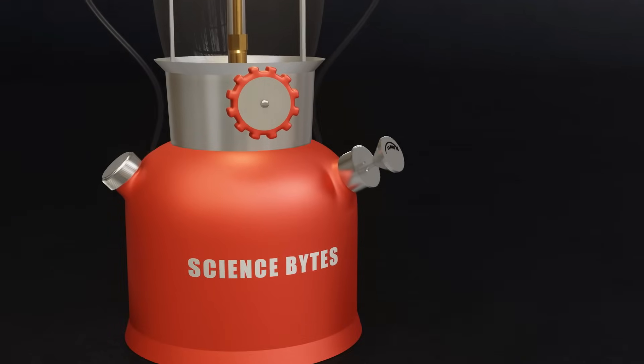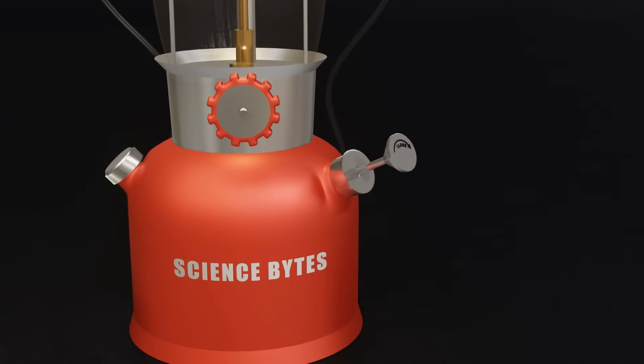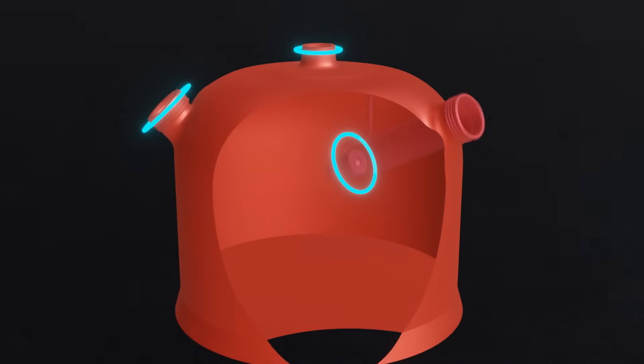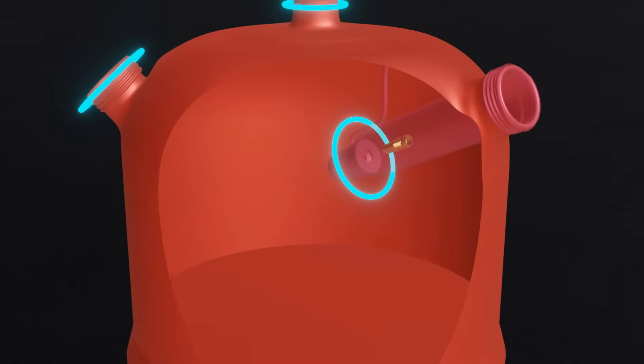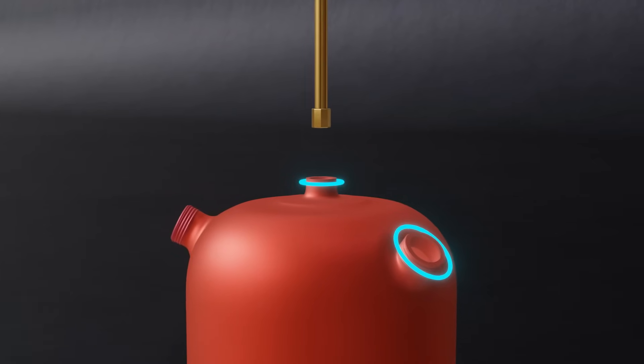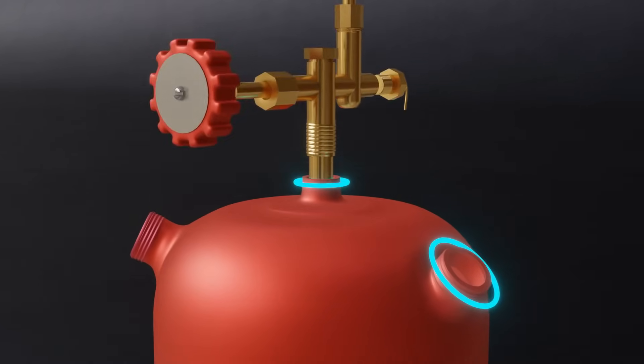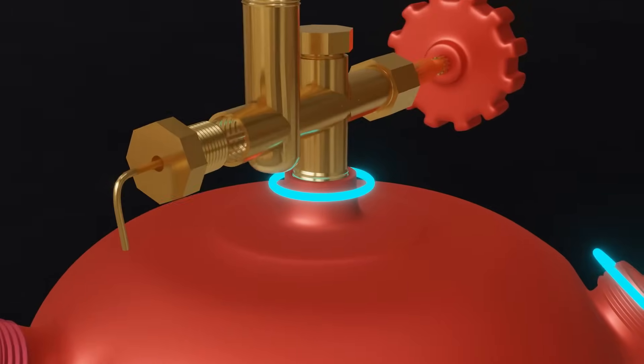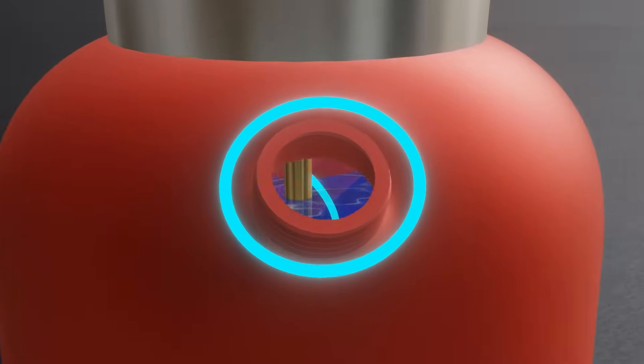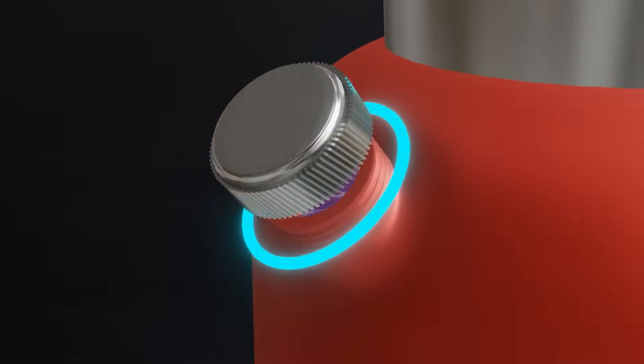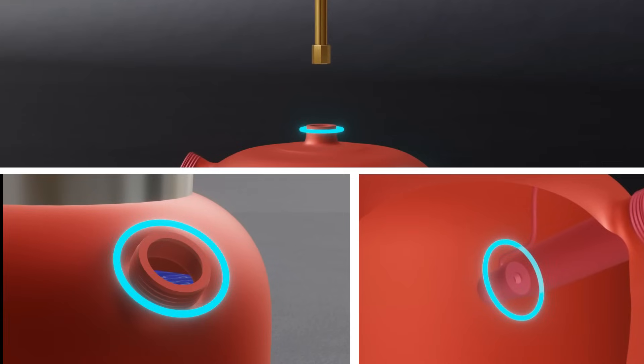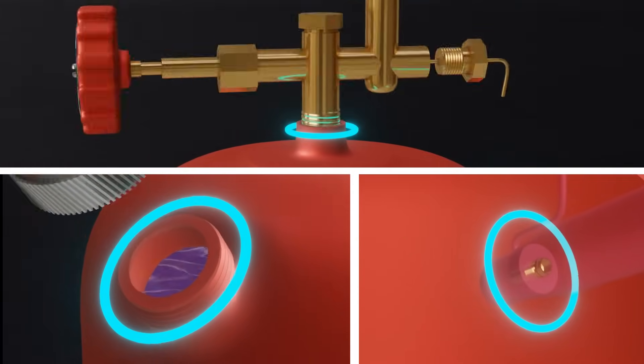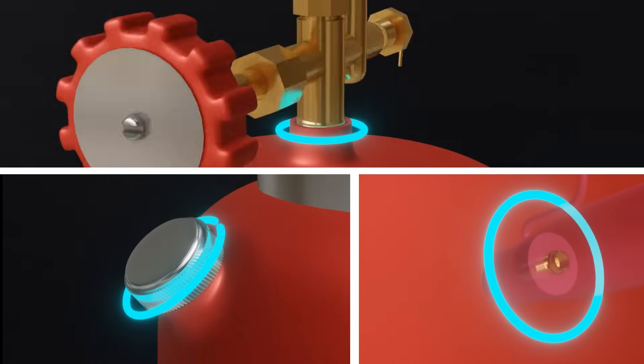Before pressurizing the fuel tank, it's important to understand how to maintain that pressure. The fuel tank has three points that must be sealed to keep it airtight. The first is the pump, which is sealed by the check valve. The second is where the lantern's fuel valve enters the tank from the top. This connection is threaded to ensure a secure airtight seal. The third is the opening where fuel is added, which is sealed with a heavy rubber gasket inside the fuel filler cap. Once the fuel valve is in place, the fuel filler cap is tightened, and the check valve is closed, the fuel tank becomes completely airtight.